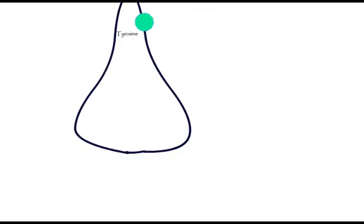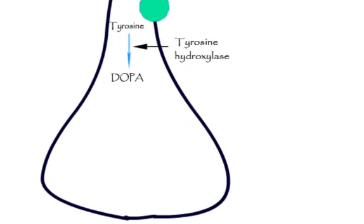Tyrosine transported into the nerve is converted to DOPA by enzyme tyrosine hydroxylase. Dopamine is then synthesized from DOPA by action of enzyme DOPA decarboxylase.